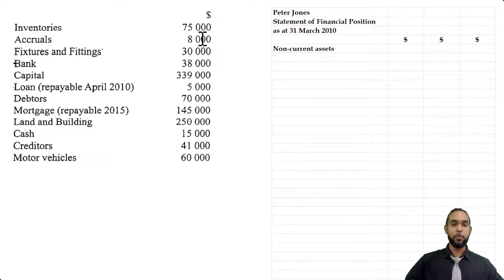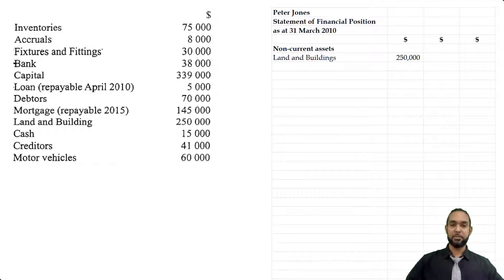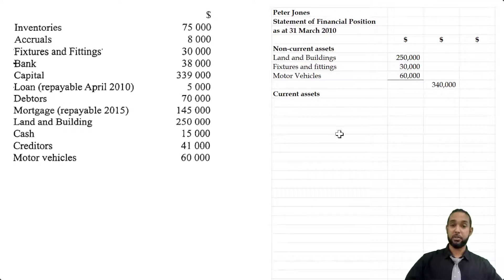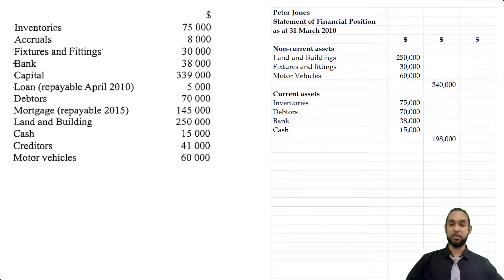We start with non-current assets. From the list we have fixtures and fittings, land and building, and motor vehicles. We'll order them: land and building first (most permanent), then fixtures and fittings, then motor vehicles. We take a subtotal for non-current assets, then move to current assets: inventories first, then debtors or accounts receivable, then bank, then cash last. That gives us a subtotal of $198,000 which, added to $340,000, gives us $538,000 for total assets.